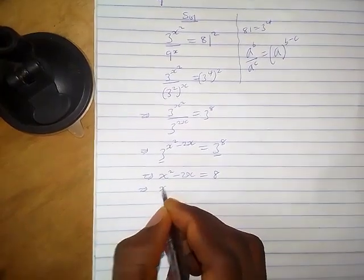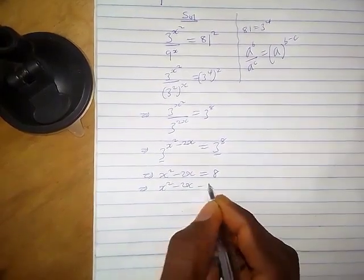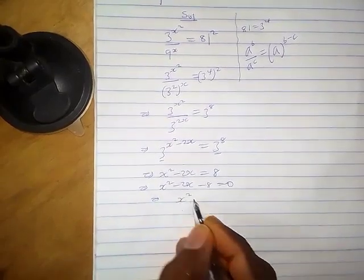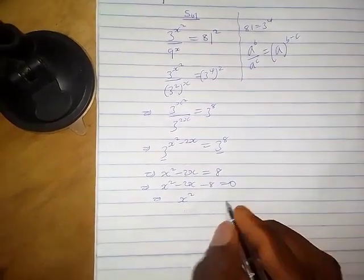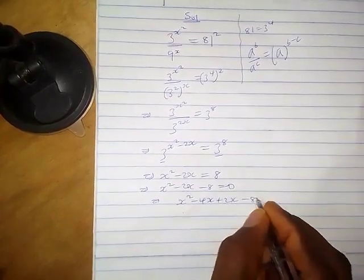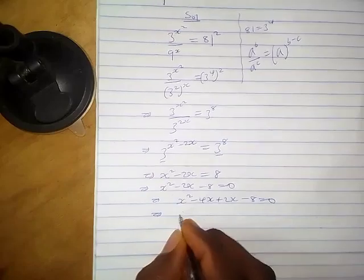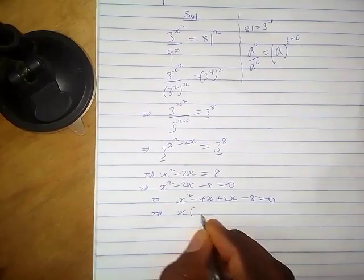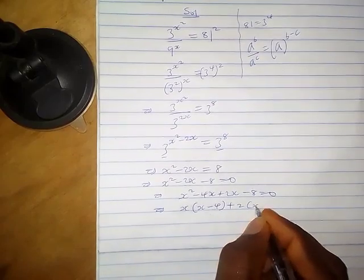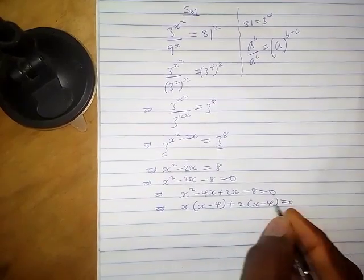Now let's factorize this. We have x squared minus 2x minus 8 equals 0. When we do that, we have x squared minus 4x plus 2x minus 8 equals 0. x is common, so we have x times x minus 4 plus 2 times x minus 4, which equals 0.